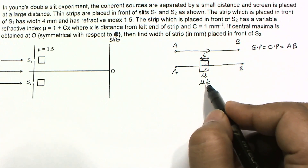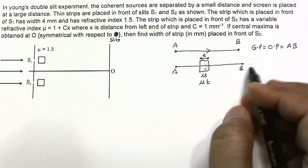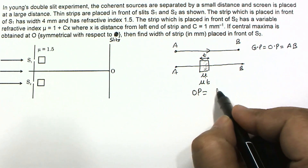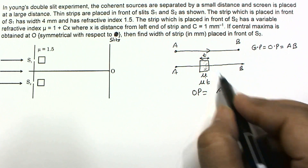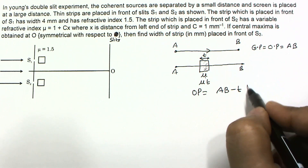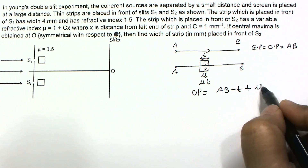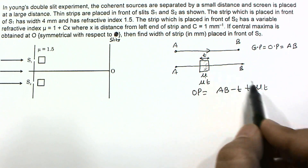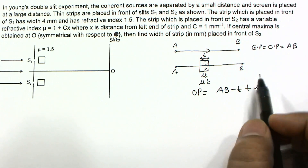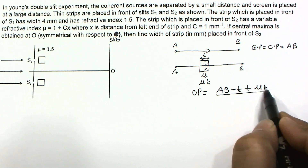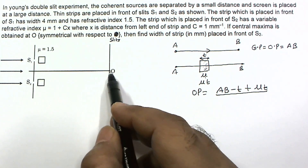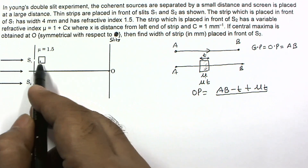Optical path is the equivalent length in vacuum. So if AB is a distance T in vacuum and we replace it with a medium, the optical path becomes μ times T. Between points A and B, we compute the optical path by considering the refractive index and thickness.